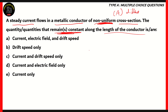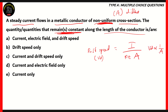Drift speed Vd equals current over the number of electrons times electric charge times area. As you can see, drift speed is inversely proportional to area, meaning it depends on area. Therefore, any option containing drift speed is already incorrect — options A, B, and C are all incorrect because drift speed is not constant along the length of a non-uniform cross-sectional conductor.